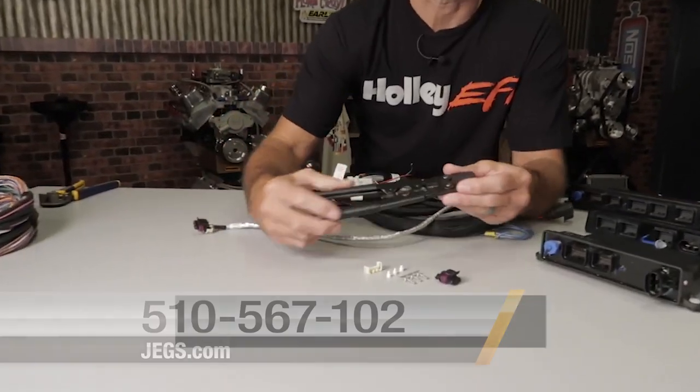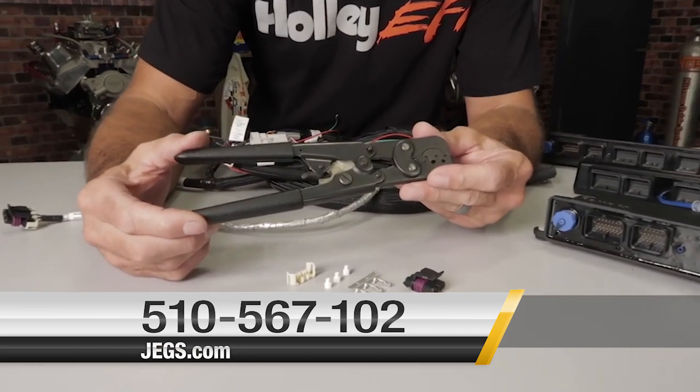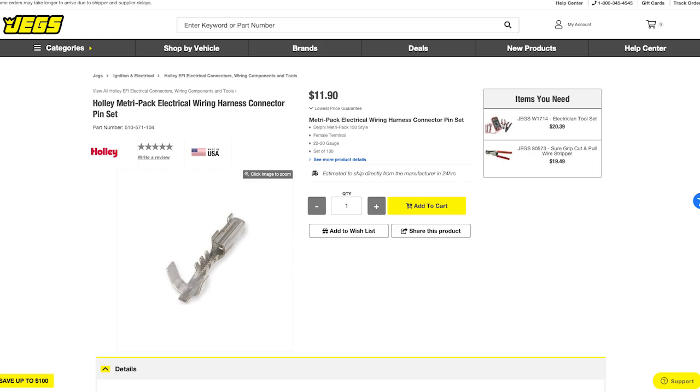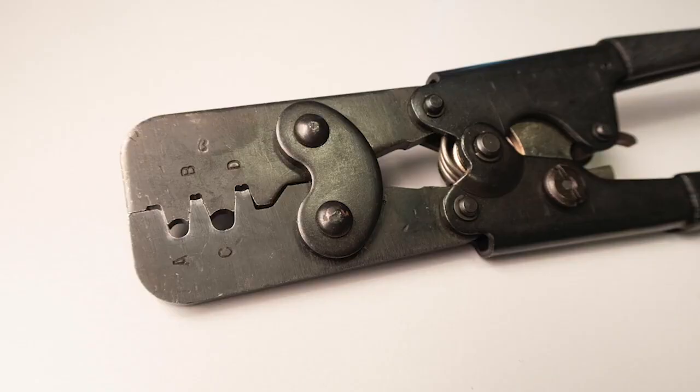To crimp the MetroPak 150s, I'll be using these crimpers, part number 567-102. These crimpers can be used to crimp WeatherPak and the MetroPak 150, as well as the 280 terminals. You'll find two jaws for crimping anywhere from 14 to 20 gauge wires, and two circular jaws for crimping the seals. Once again, the more you spend on the tool, the better quality crimp you're more than likely to get.